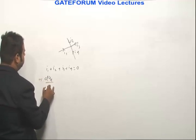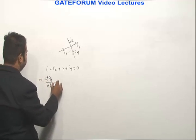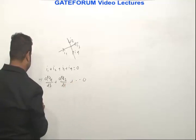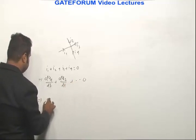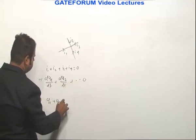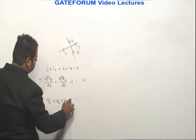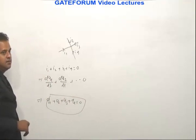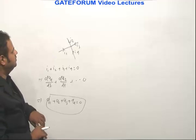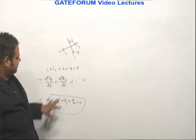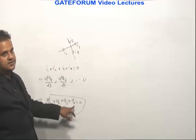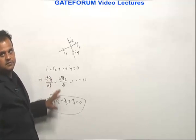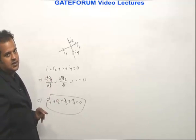You can replace this by dQ1/dt plus dQ2/dt and so on. What equation do we get? Q1 plus Q2 plus Q3 plus Q4 equals 0. What does this say? There is no accumulation of charge in the node, which implies that charge is conserved. So Kirchhoff's current law works on the principle of conservation of charge.